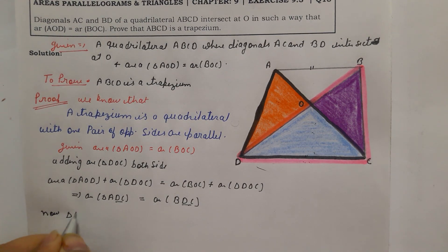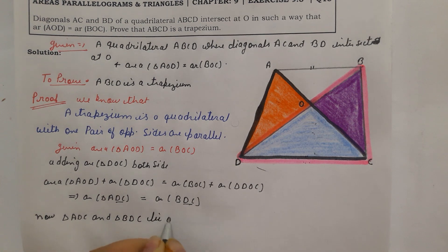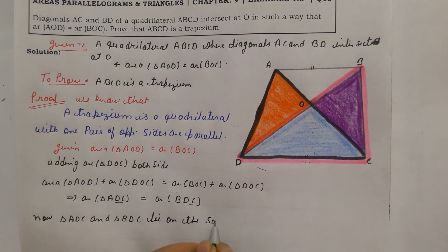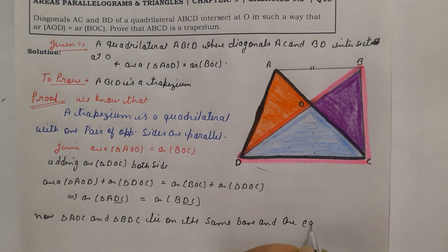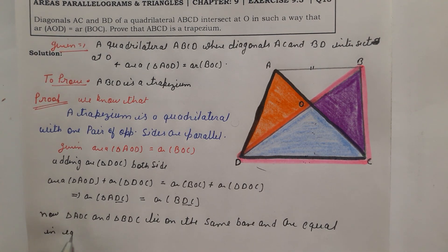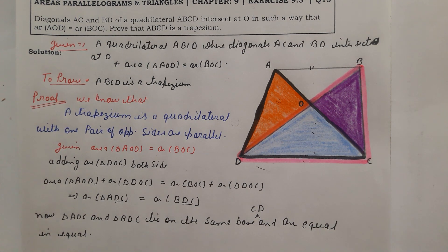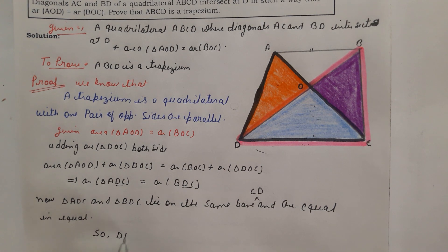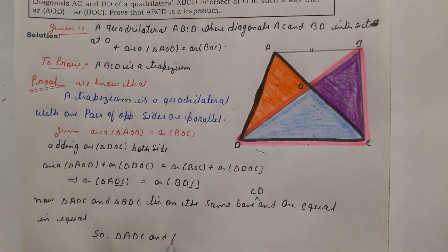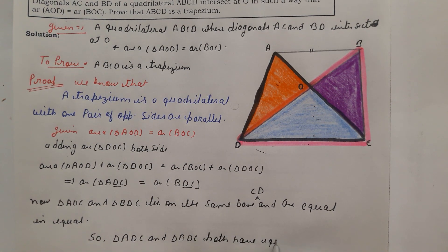So triangles ADC and BDC lie on the same base DC and are equal in area. As stated in the theorem: if two triangles have the same base and equal areas, then they must have equal altitudes. Therefore triangles ADC and BDC both have equal altitude.